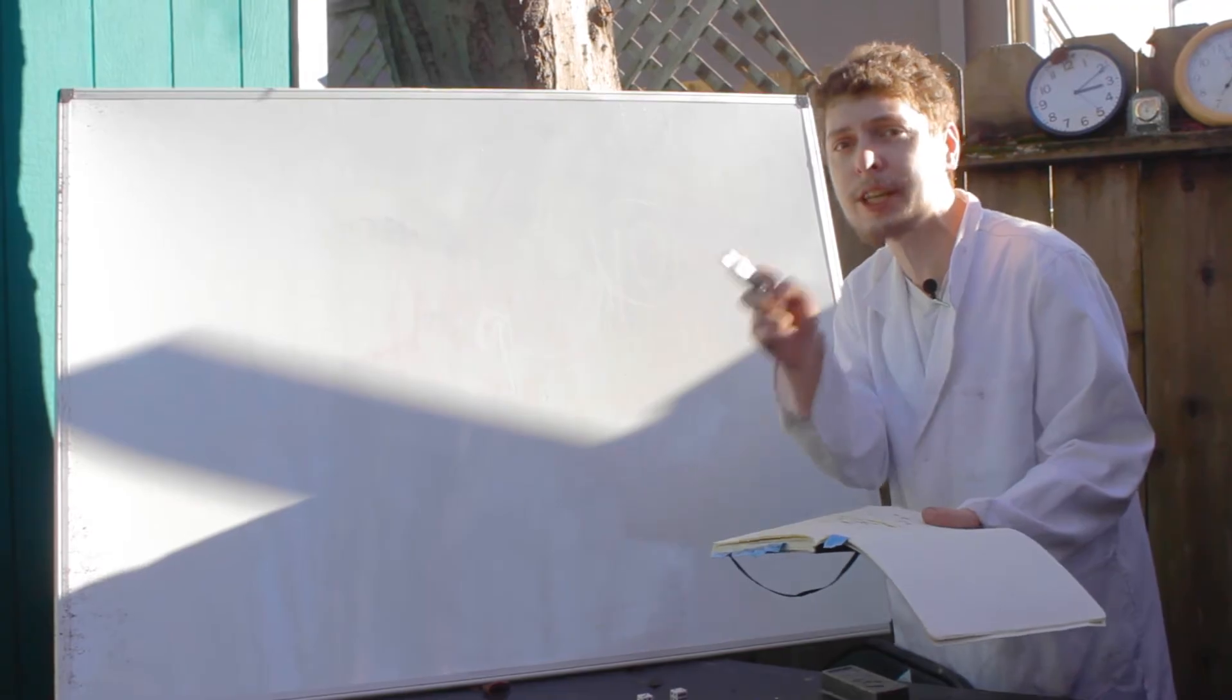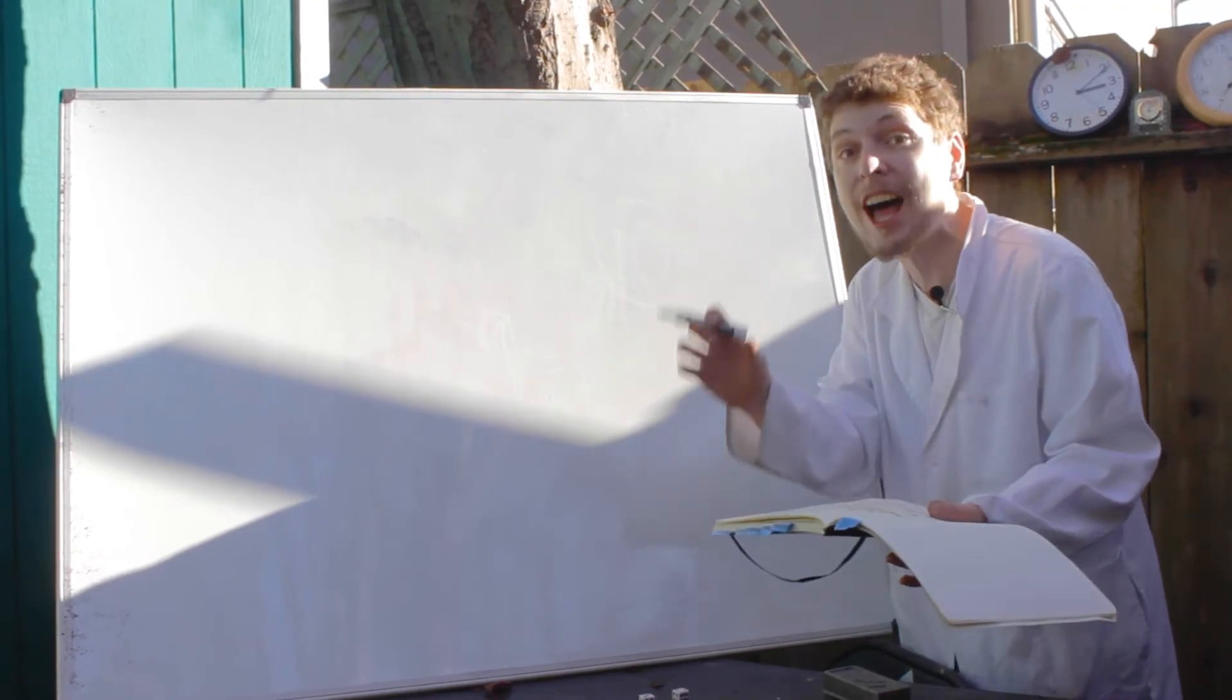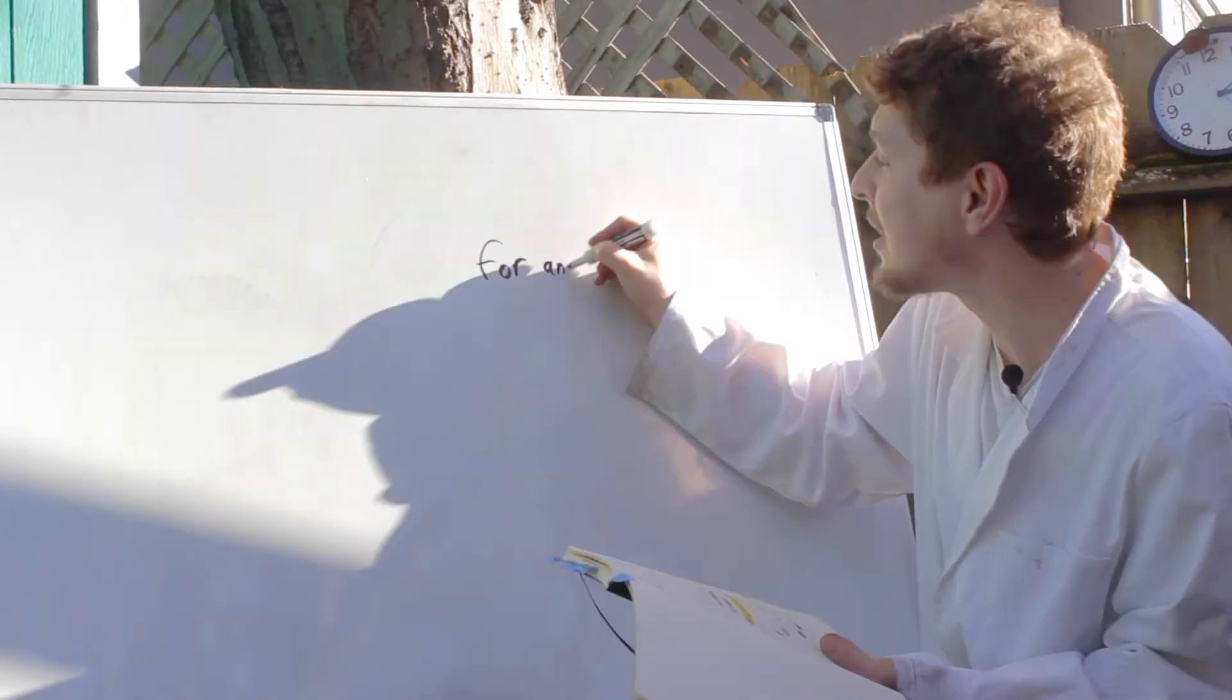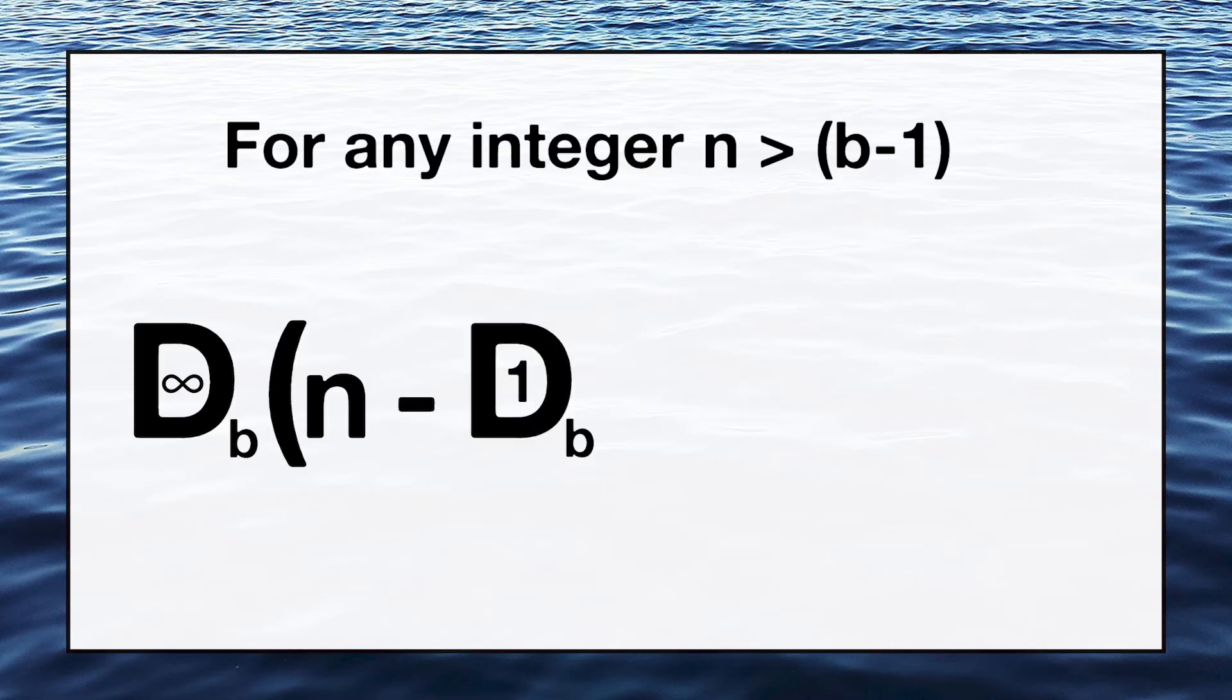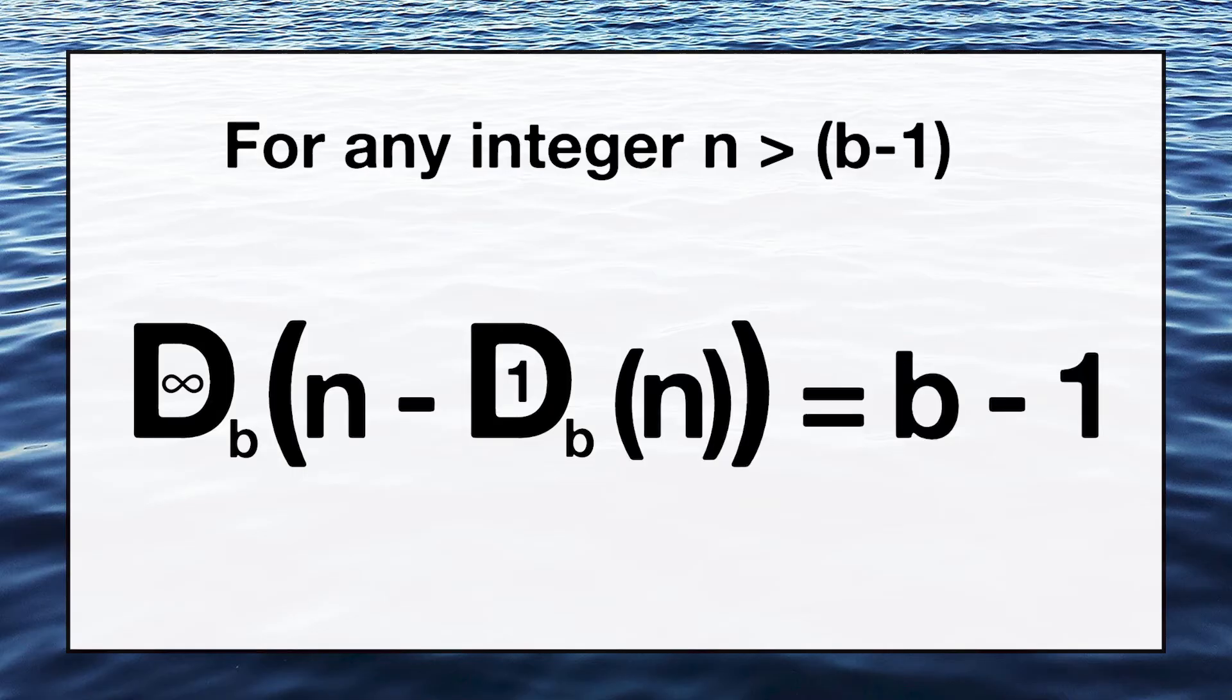Just in case people switch over to another system of base counting soon, I better take that formula I wrote down earlier and write down a version that would apply to any system of base counting. This will apply for any integer that is greater than base minus one. B is going to be whatever base you want to count your numbers in. Take the digital root using whatever base you want of whatever number you picked, minus the digital sum using that same base of the number, and you get one under the base you were counting in.